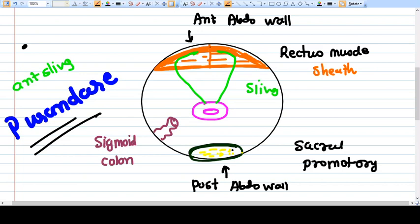The maroon-orange thing is rectus muscle and around the rectus muscle there is a rectus sheath.